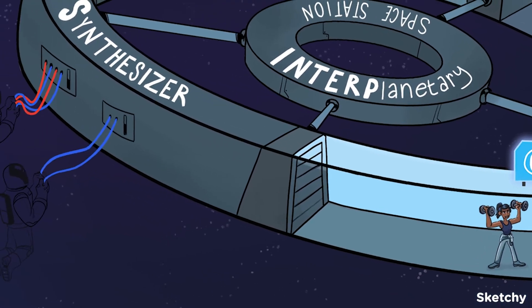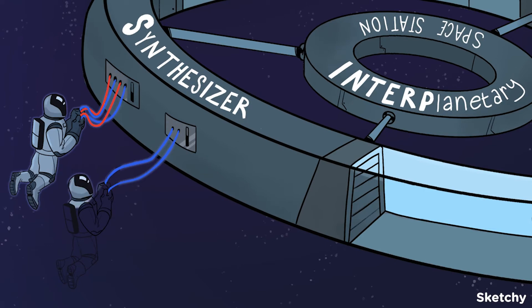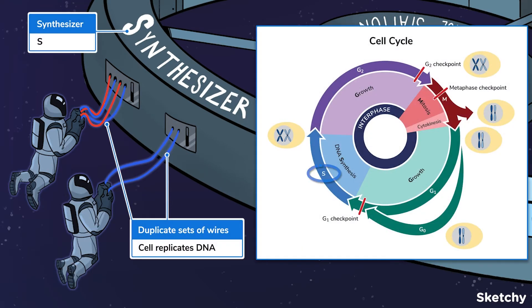On to the synthesizer room. This is where new information gets synthesized. Okay, we don't actually know what goes down here. But let these duplicate sets of wires remind you that a cell doubles its chromosomes during the S phase.